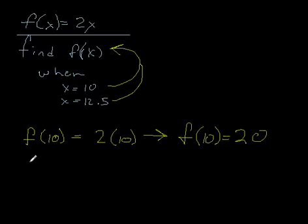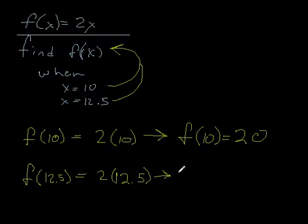Now, if you look at x equals 12.5, you're going to substitute 12.5 for x, and you'll find out that 12.5 times 2—let me write it out first—but 12.5 times 2 is 25. So f(12.5) equals 25, because 2 times 12.5, or 12.5 doubled, equals 25.